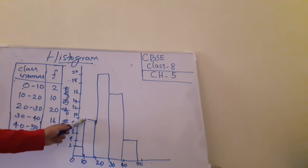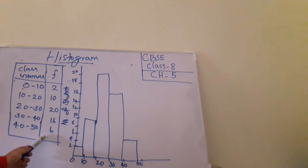Here the height tells the frequency. Height of the bars tells the frequency of the table. And there is no gap between the class intervals. That is the main difference in the histogram.